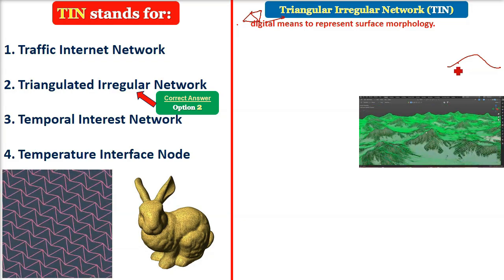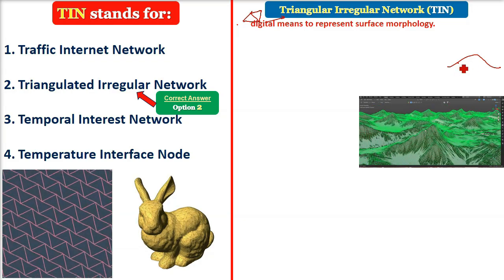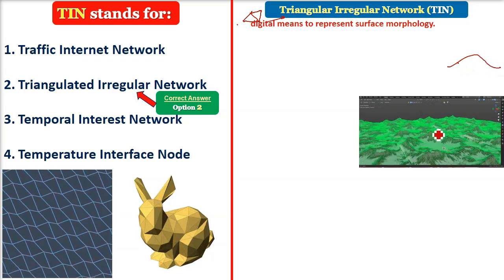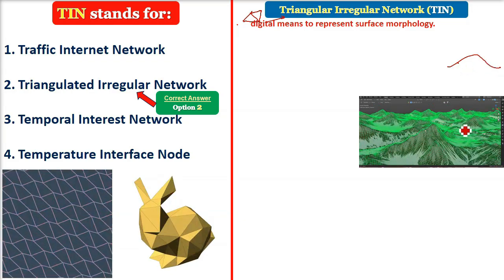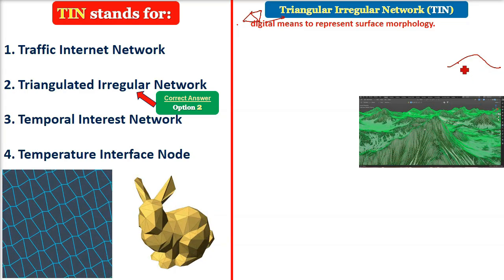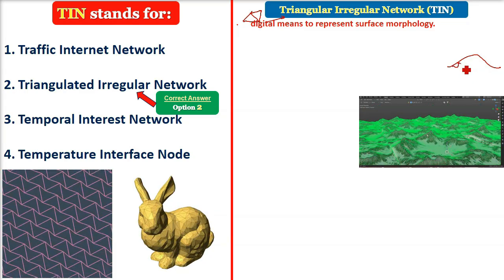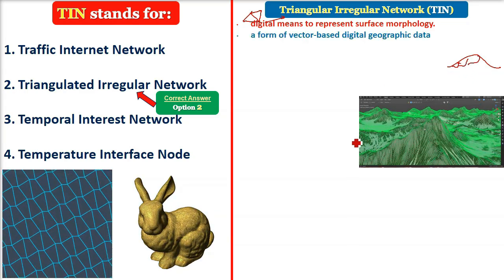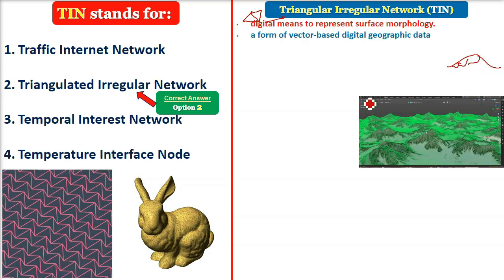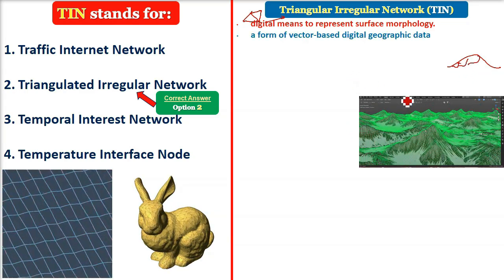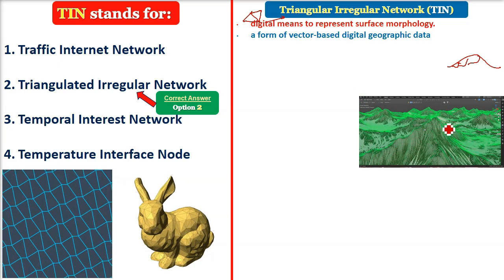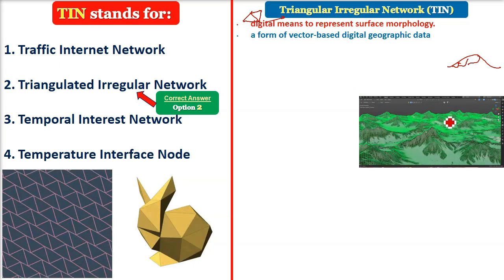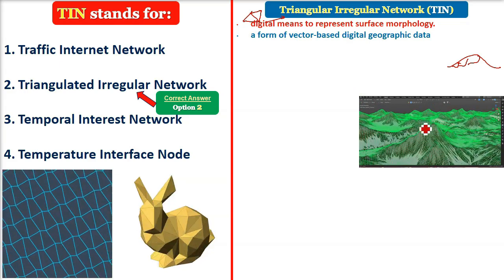For example, if you want to show terrain or a mountain, you take the elevation and form triangles out of it. These triangles make a mesh, and over that you can drape an image.